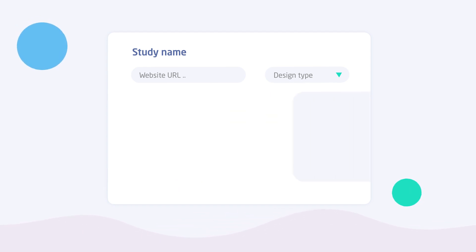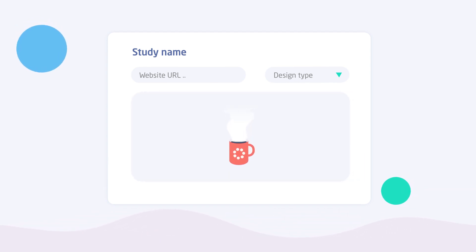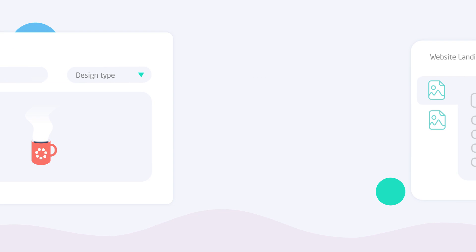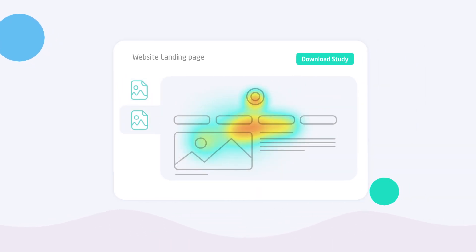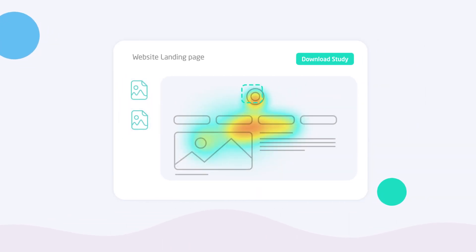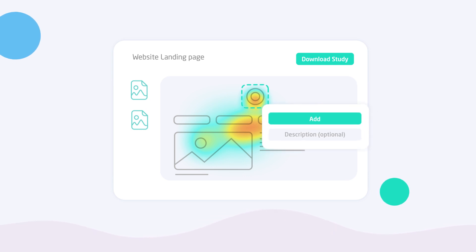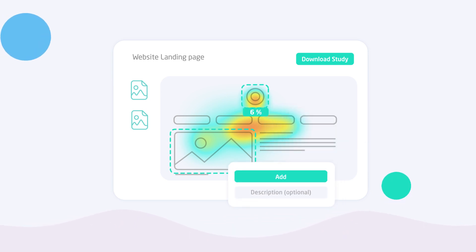In seconds, Attention Insight will generate your result. Attention heat maps show which design elements captivated the user's attention. Areas of interest calculate how much attention each object received.